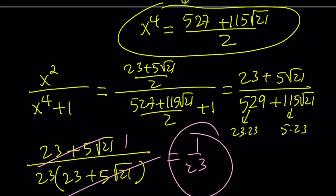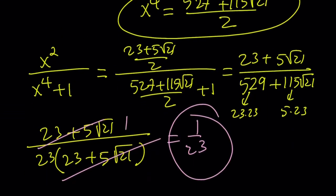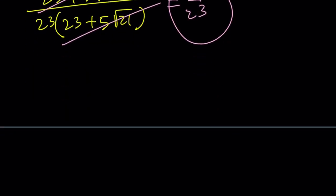Go ahead and cancel out and you end up with 1 over 23. Using the first method, which is kind of brute forcey, but it gives you the answer anyways. So let's go ahead and do the second method.